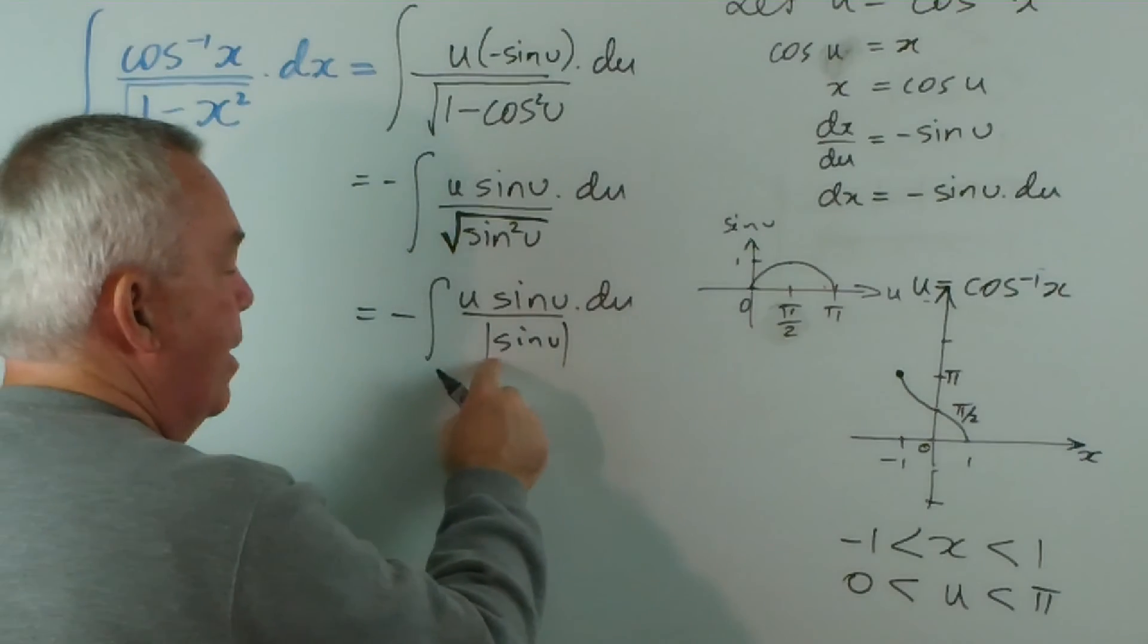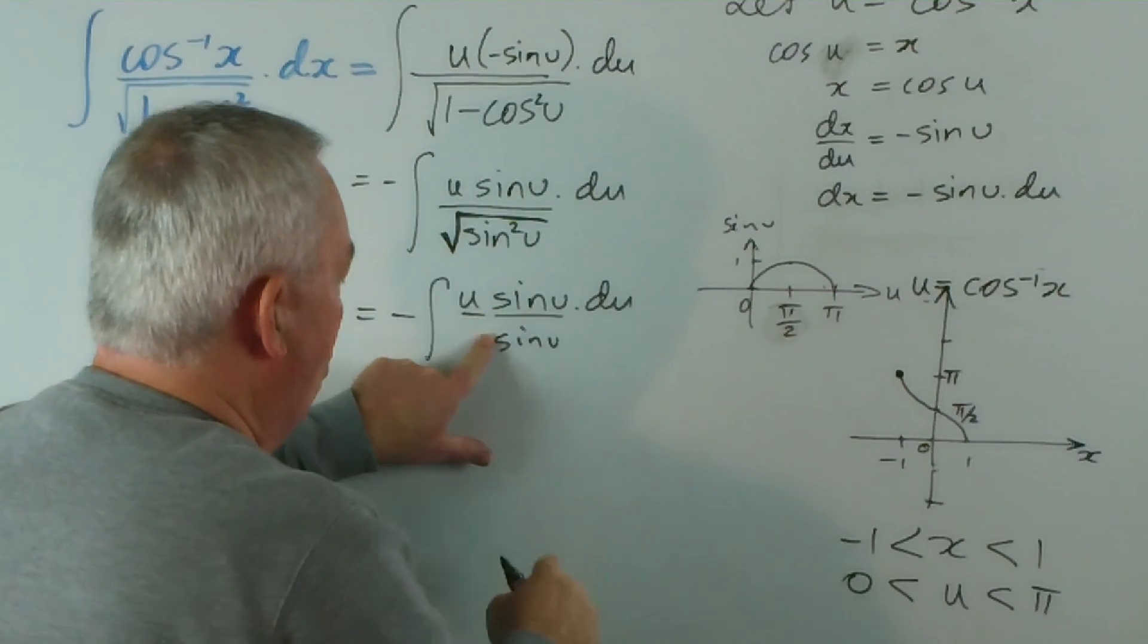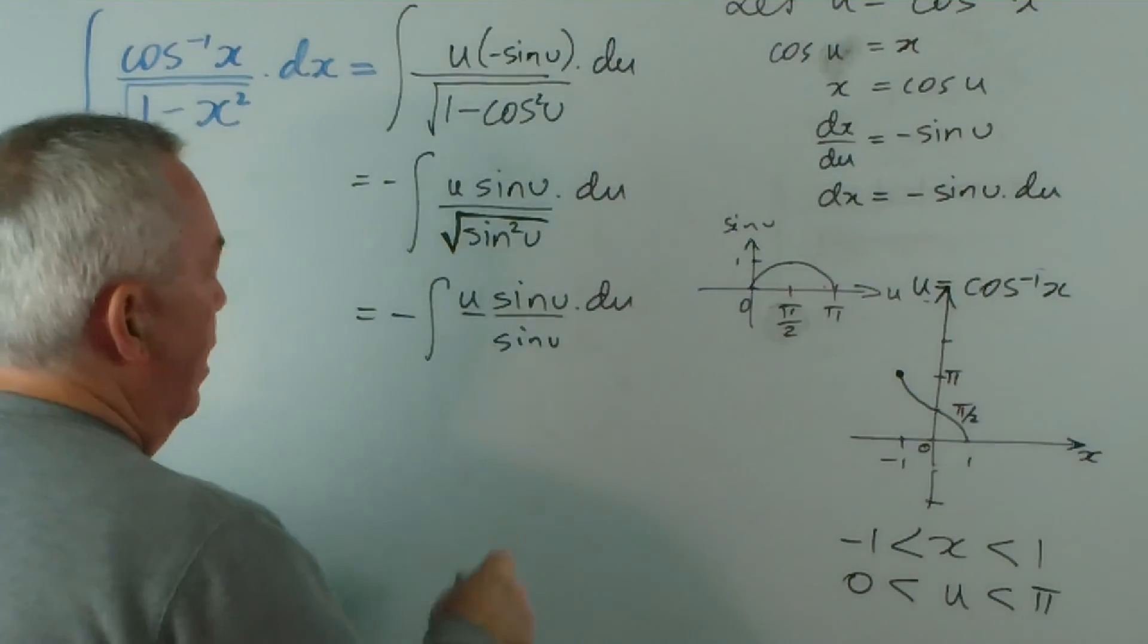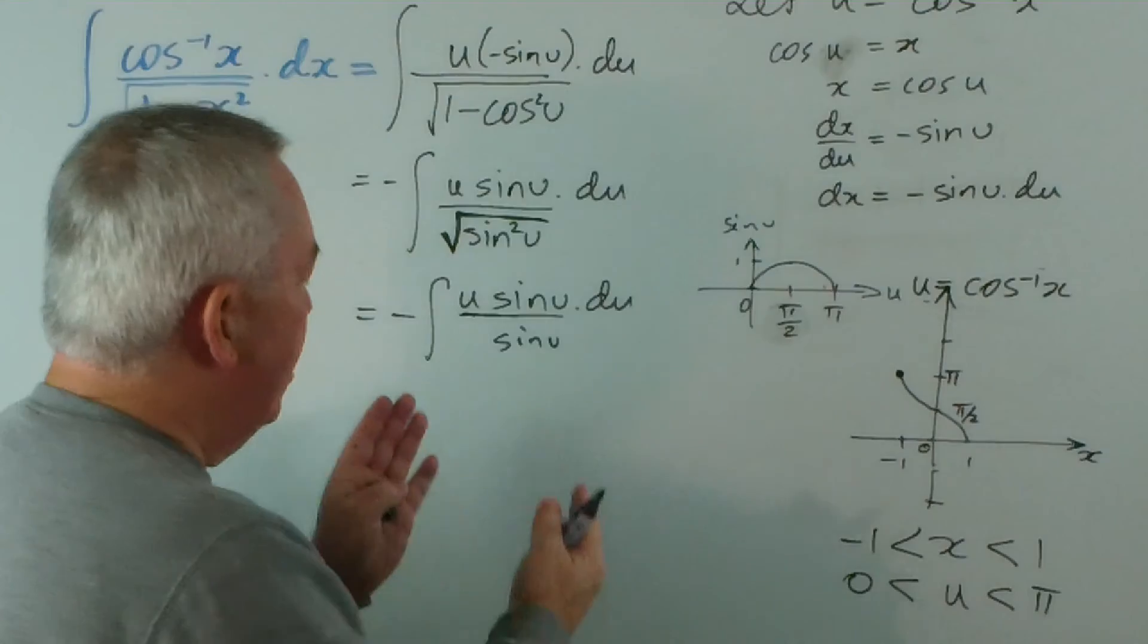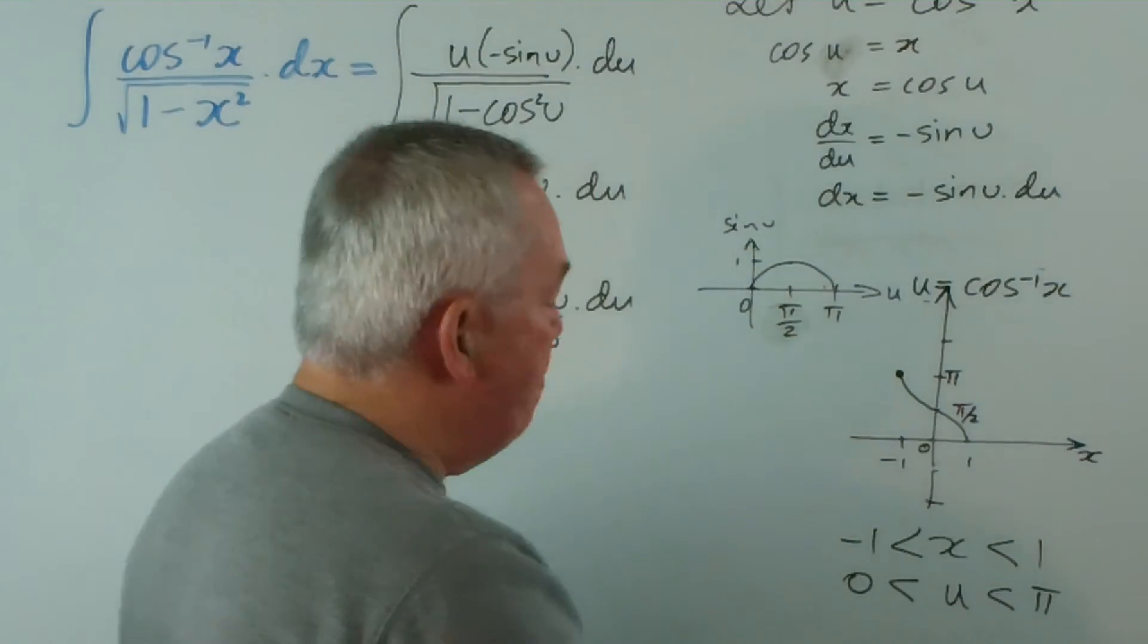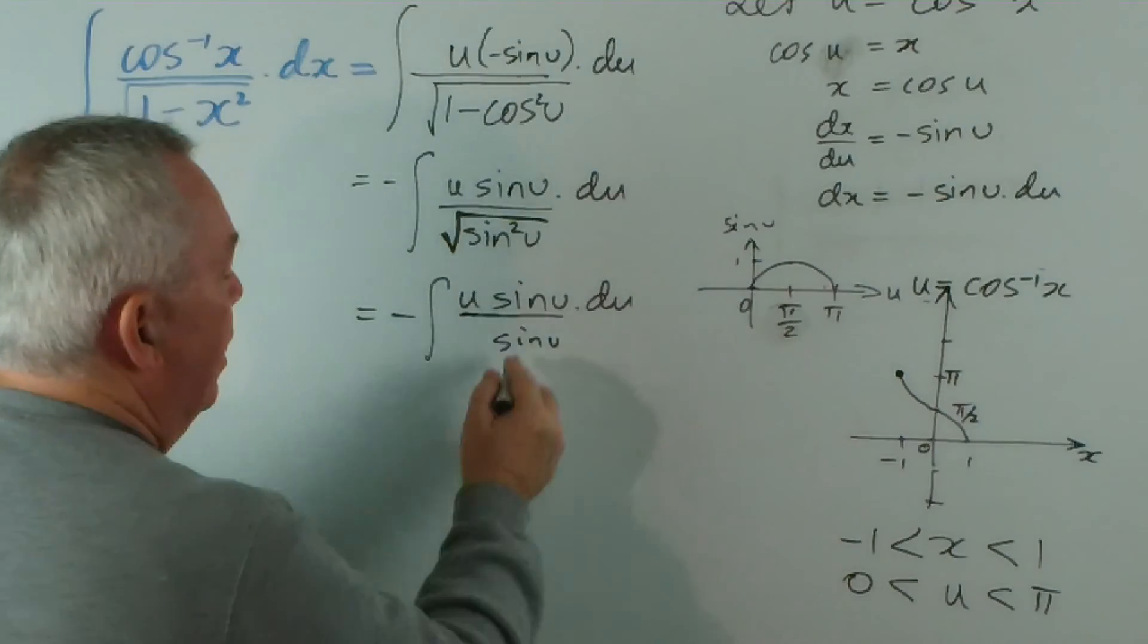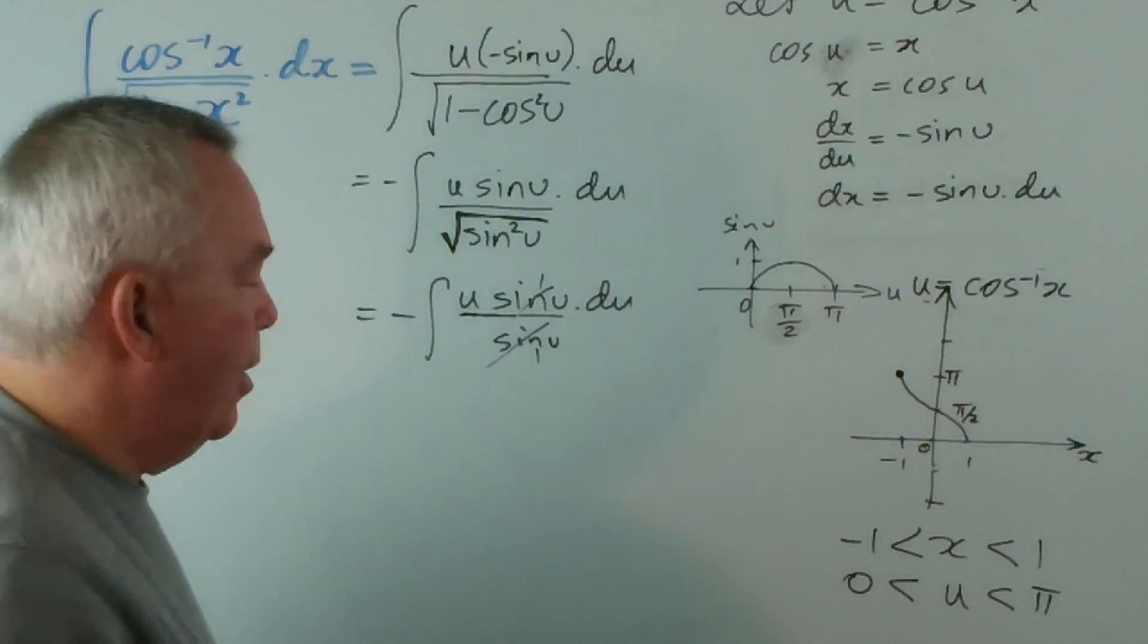So taking the absolute value of it makes no difference. It's always going to be positive anyway in that domain. And therein lies a simplification here. We don't have to take account of whether sine u is negative or positive. By noting the domain, we know it's going to be positive. And therefore we can simply divide it out and not worry about the sine.